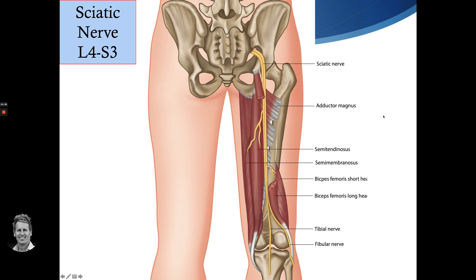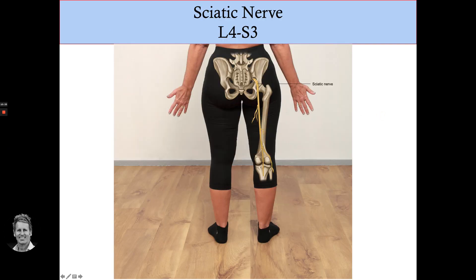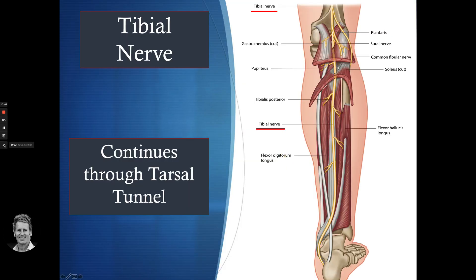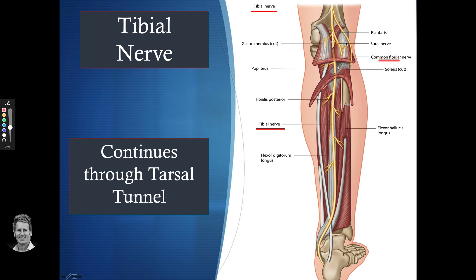Looking at the model, you can see the sciatic nerve coming out of the greater sciatic foramen, then the tibial nerve continuing down and the peroneal (fibular) nerve going around. The tibial nerve supplies all the muscles in the posterior lower limb: tibialis posterior, popliteus, gastrocnemius, flexor digitorum longus, and flexor hallucis longus.